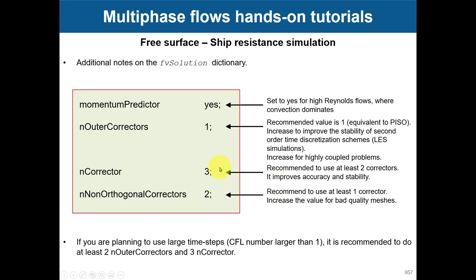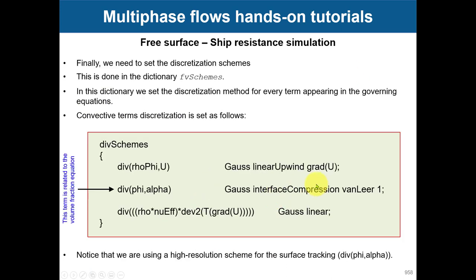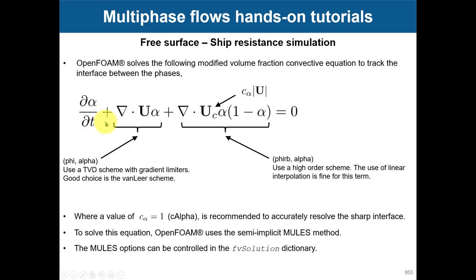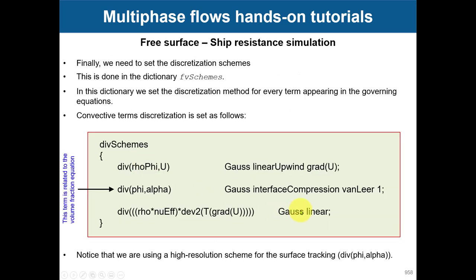For discretization, in fvSchemes you define the divergence term for alpha. To solve alpha you need good methods because of the strong discontinuity. The recommended method is a combination of interface compression with vanLeer. Follow this advice — there are more advanced variants but this is the standard recommended one.